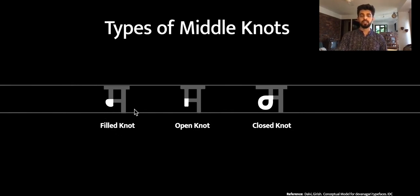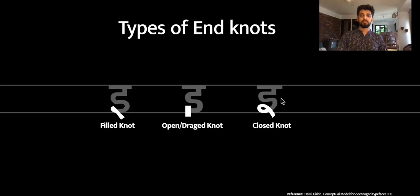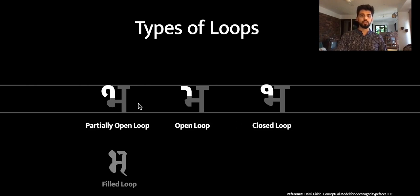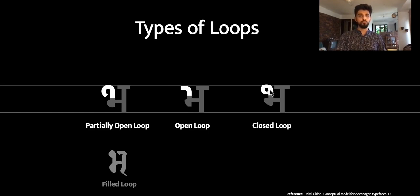Here we have the middle knot: there is a filled middle knot, an open middle knot, and a closed middle knot. Similarly, for the ending knot there is a filled knot, a dragged or open knot, and a closed knot. Loops are usually towards the starting of a letter, observed in bha and sha. Loops are of three or four types if you consider a select few calligraphic typefaces of a particular era: a partially open loop, a completely open loop, and a closed loop. There is also a filled loop but it relates to only a select few fonts.